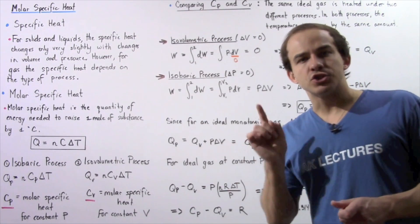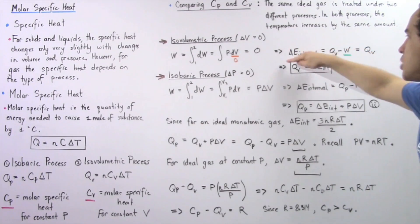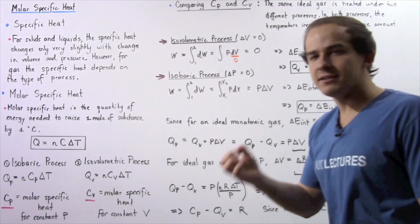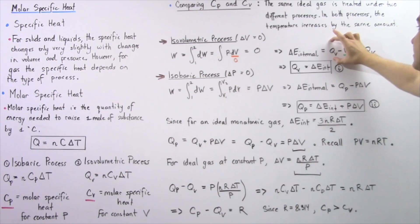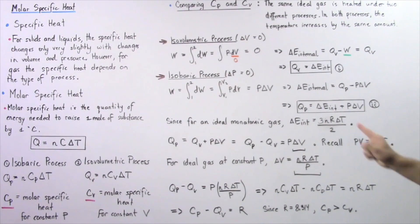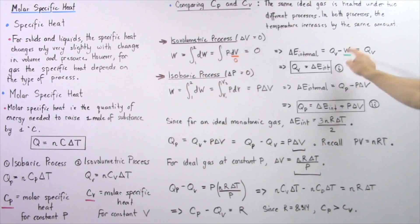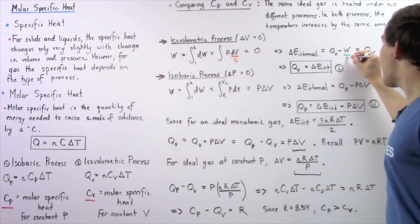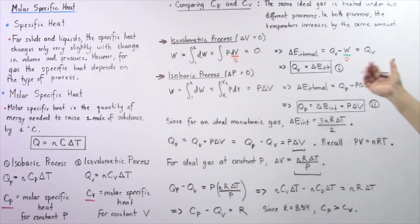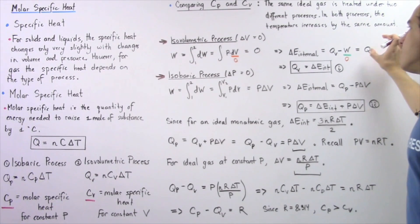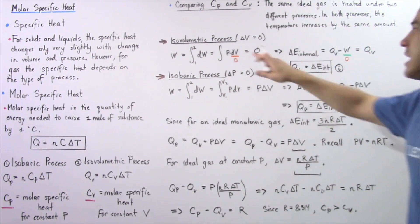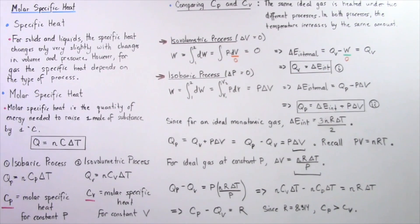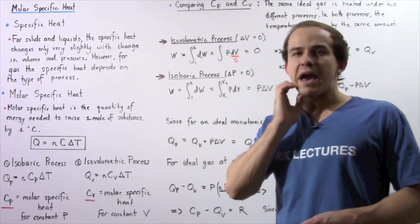Recall that the first law of thermodynamics states that the change in internal energy of our ideal gaseous system is equal to the sum of the work and our change in energy due to heat. Because our work is zero, our change in internal energy of our system is simply equal to the amount of energy transferred as a result of a difference in temperature — Qv. Let's call this equation I.